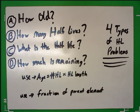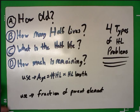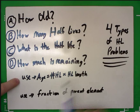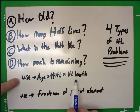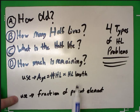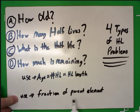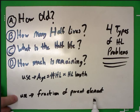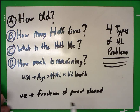There are two ways that you could solve these problems. This equation from our notes: age equals the number of half-lives times the half-life length — we've used that one often. The other method is to use the fraction of the parent element that's remaining. Now I'm going to list which solution you would need to use for each problem type.